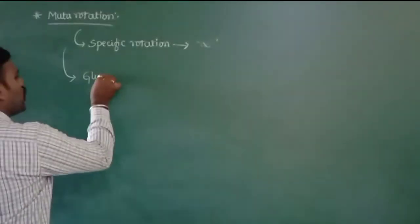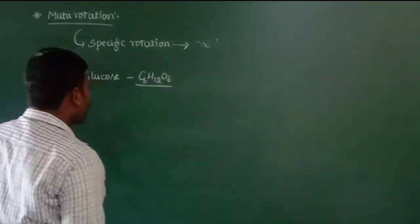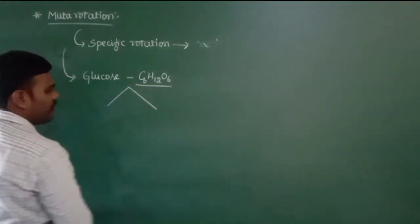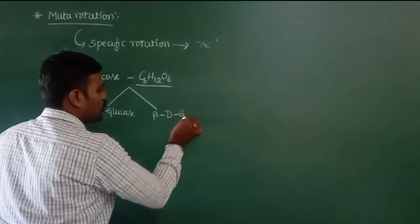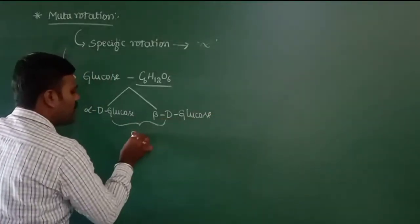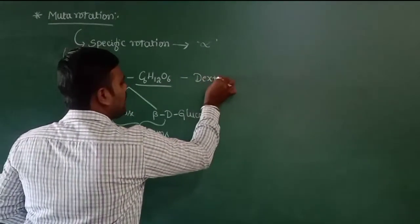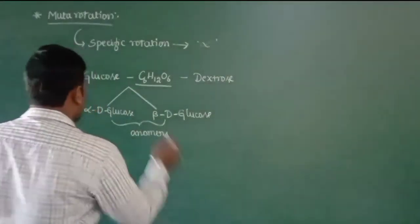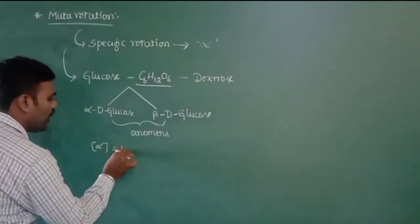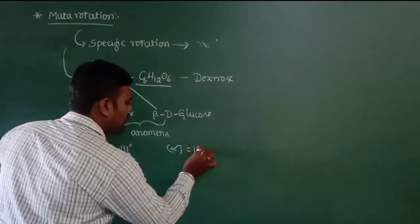If you consider the simplest carbohydrate molecule — glucose, which has the formula C6H12O6 — glucose can exist in two different forms. One is called alpha-D-glucose and the other is called beta-D-glucose. These two are collectively called anomeric forms of the glucose molecule. Glucose is a dextrorotatory material, hence we call it dextrose. Both alpha-D-glucose and beta-D-glucose are dextrorotatory in nature: alpha-D-glucose has a specific rotation of around 111 degrees, and beta-D-glucose has a specific rotation of 19.2 degrees.